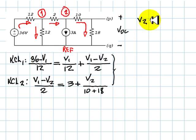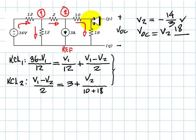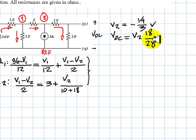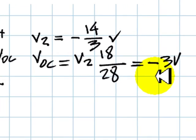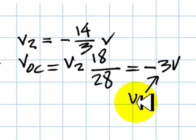V2 is negative 14 over 3 volts. But the voltage we want, VOC, is given by a voltage divider, that is V2 times 18 divided by 18 plus 10, 28. And that is negative 3 volts.